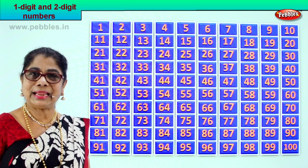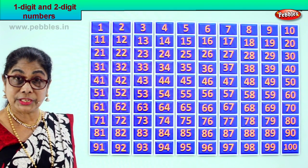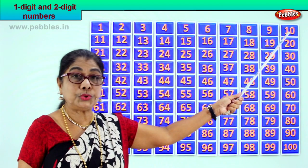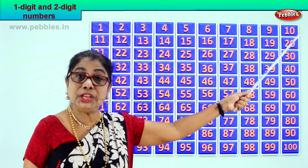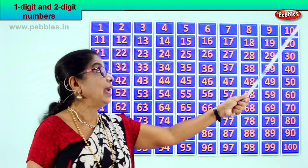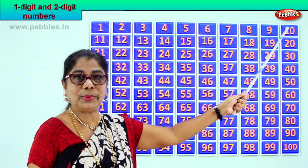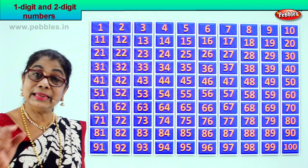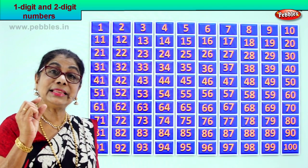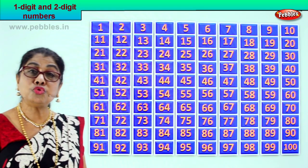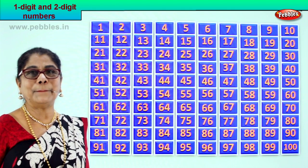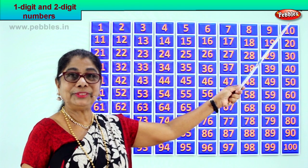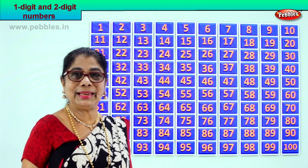Now look — what is the meaning of two-digit numbers? Number 10 is a two-digit number. There is 0 in the ones place and 1 in the tens place. So number 10 is the smallest two-digit number. 1 and 0 — 10. Two digit number, yes?